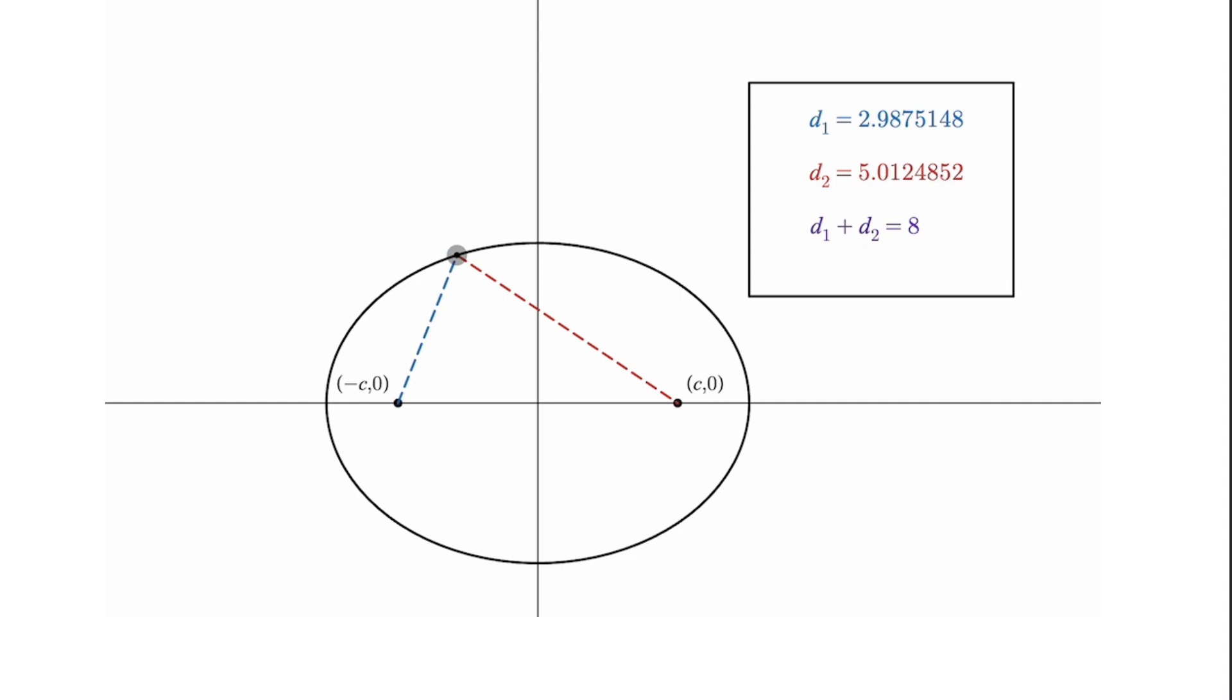The one on the left being at coordinates negative c comma zero and to the right c comma zero. Notice that the point directly between them is zero zero, which we call the center of the ellipse, and the ellipse has the property that any point that's on the ellipse...